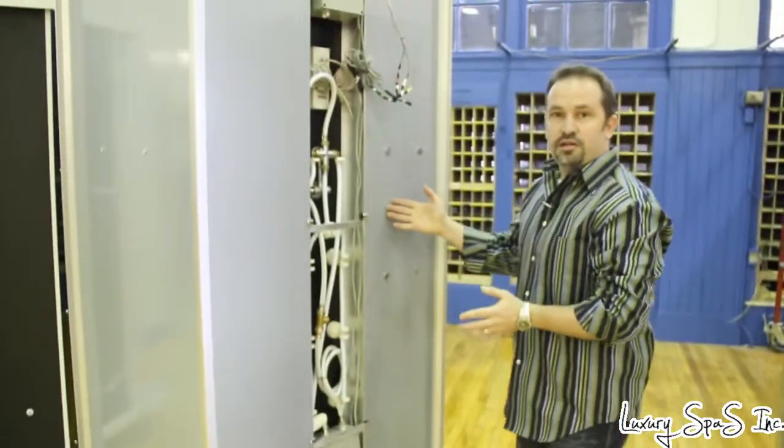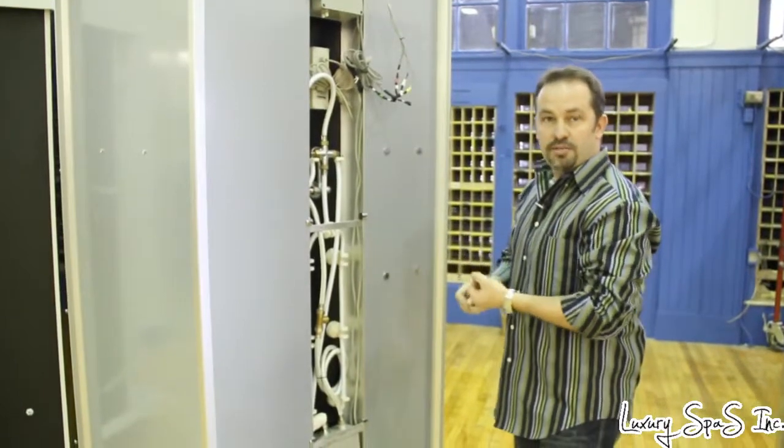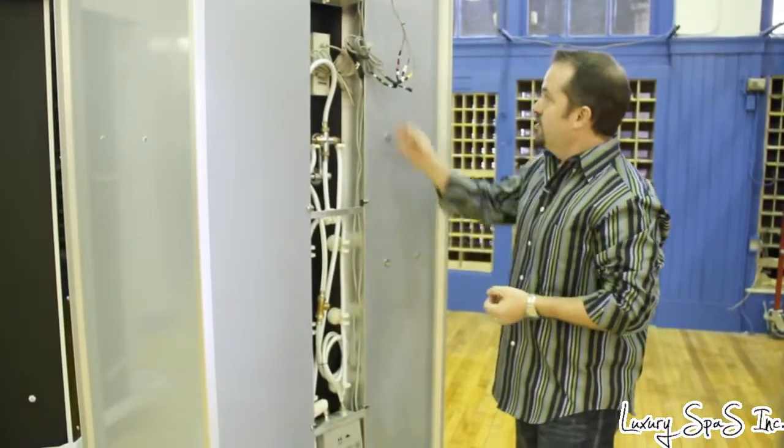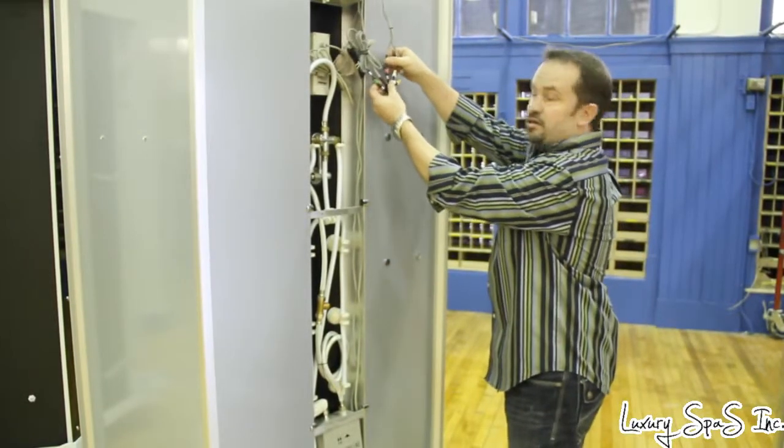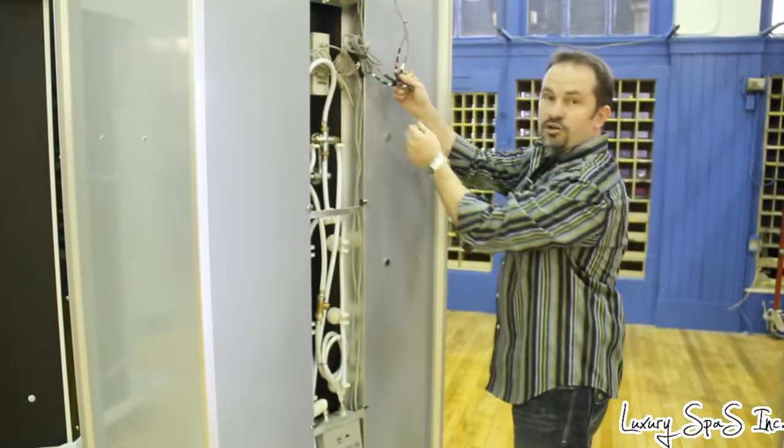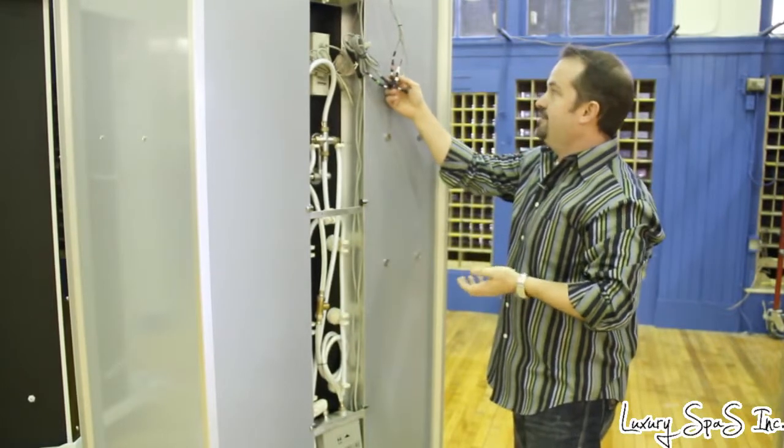This is exactly what it looks like before you even do any of the plumbing or electrical on the unit. The rest of the electrical simply snaps together and it's color-coded and labeled and very easy to hook up.